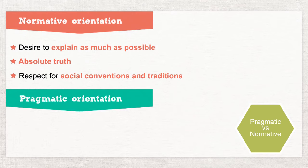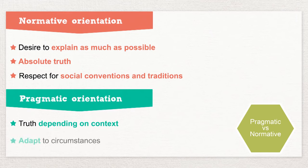In societies with a pragmatic orientation, most people don't have a need to explain everything, as they believe it is impossible to fully understand the complexity of life. The challenge is not to know the truth, but to live a virtuous life. People in pragmatic societies believe that truth depends very much on situation, context, and time. They show an ability to accept contradictions, adapt according to circumstances, a strong propensity to save and invest, and thriftiness and perseverance in achieving results.